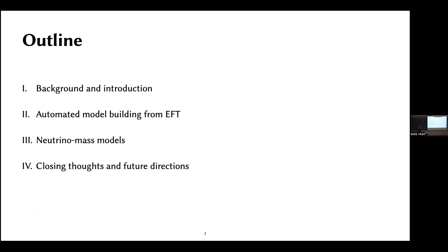This is the structure of the talk. I'll begin with a general introduction and background, with some initial comments about neutrino masses. I'll talk about how we automated this procedure of model building from EFT. Then I'll talk about some specifics of the models on the neutrino mass side. And finally, I'll give some closing thoughts about automated model building phenomenology and where we might go from here.